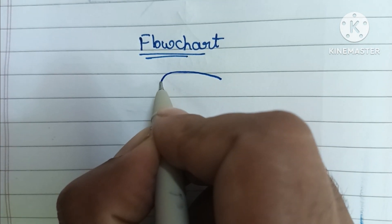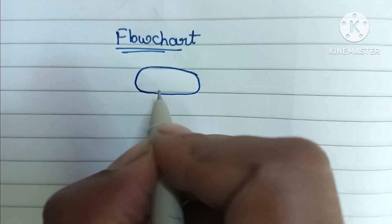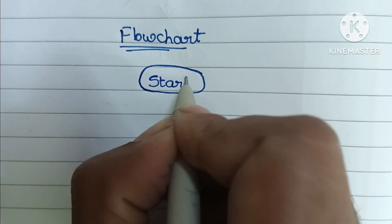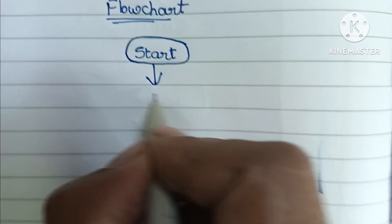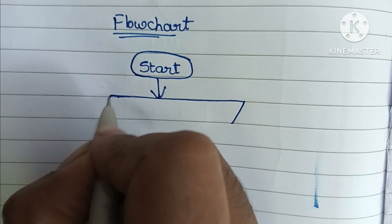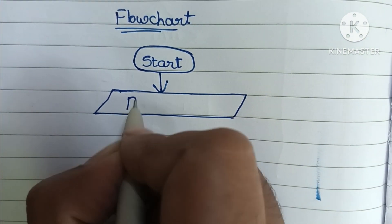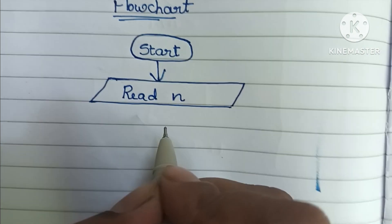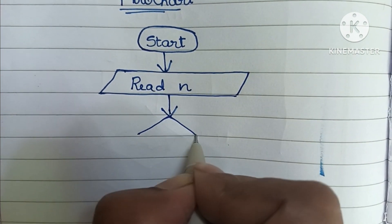A flowchart is a graphical representation of a solved problem. The flowchart starts with the start statement written within an oval shape. Next, we read the input value N, written within a parallelogram shape.